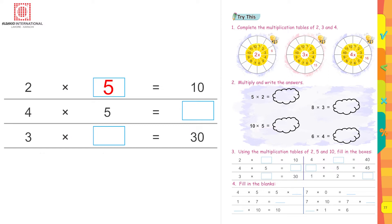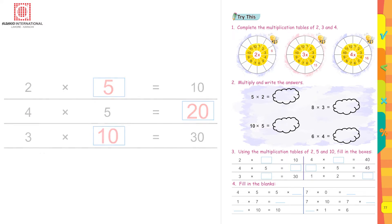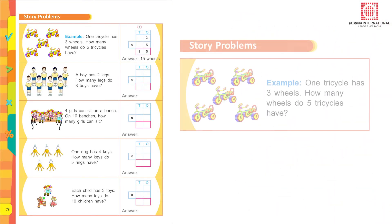The next question: 4 multiplied by 5 — four fives are equal to 20. Three multiplied by dash equals 30: count the three times table till 30, so the answer is 10. This is how you are going to attempt these questions.